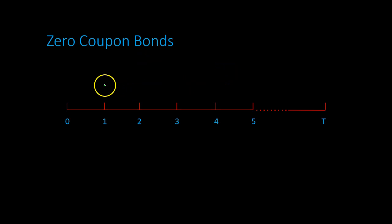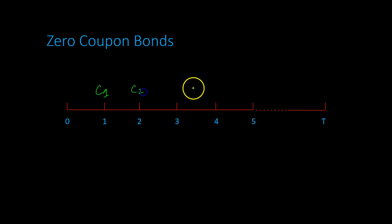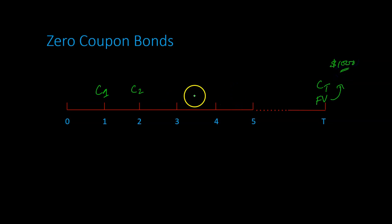By now, you know that bonds are a way through which corporations and even governments borrow money. A typical bond will make some sort of coupon payments — C1 being the coupon payment at time period 1, then C2, and when the bond matures, it makes the last coupon payment and gives the face value of the bond, which for most U.S. bonds is $1,000. The way lenders make their rate of return, or what we call the yield to maturity, is by paying a certain price for these cash flows.